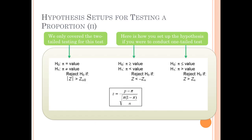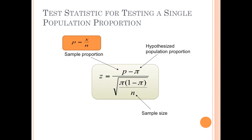You will only be tested on two-tailed tests for proportions. The population proportion pi will always be given in the question. The null is always pi equals that given value; the alternative is pi does not equal that value. You reject the null if the absolute value of your z statistic is greater than your critical value. The keywords 'different' or 'differ' in a question signal a two-tailed problem.